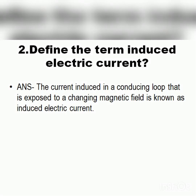For Question 2, the answer to induced electric current is: the current induced in a conducting loop that is exposed to a changing magnetic field is known as the induced current. In other words, the current produced due to changes in the magnetic field is called induced current.